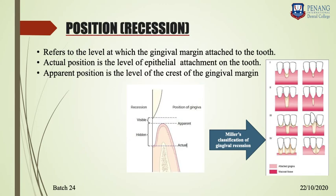The next periodontal finding is gingival recession, or position of the gingiva. This refers to the level of the gingival margin where it attaches to the tooth surface. Apparent recession is the part visible clinically — the distance from the cementoenamel junction to the gingival margin crest. Actual recession is from the cementoenamel junction to the base of the pocket.